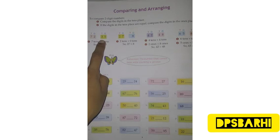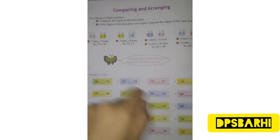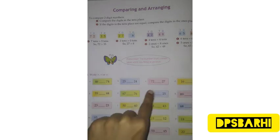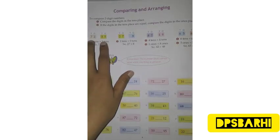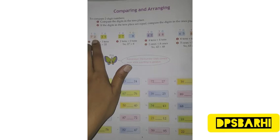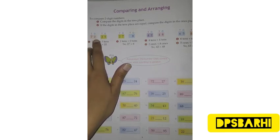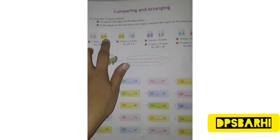The second step is to compare the digits in the tens place. If the tens place is equal, then we will proceed to the ones place. For example, the ones place is 5 and the ones place is 2. If the tens place digits are equal, then we compare the ones place.